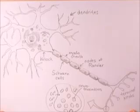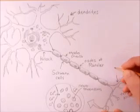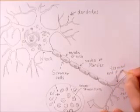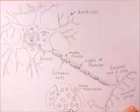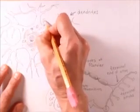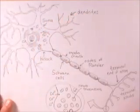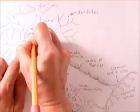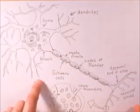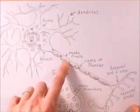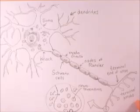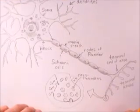Okay, we have everything labeled. The terminal end of the axon. We've got the dendrites, we've got the body — the fancy Greek word is soma. We could label the nucleus, DNA, mitochondria, Golgi bodies, the hillock, the myelin sheath — which is sometimes made of living cells called Schwann cells — the nodes of Ranvier, and the synaptic knob. That's the basics of a neuron.